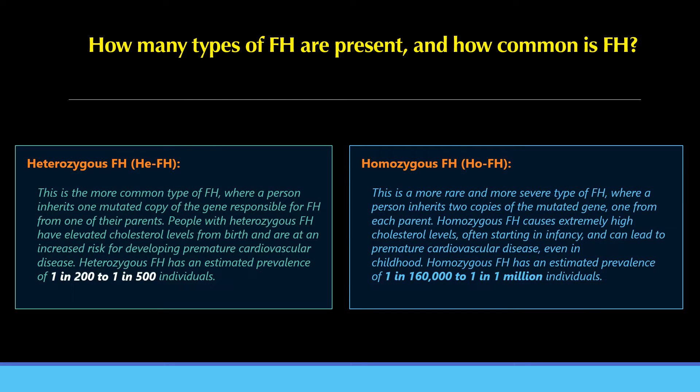Homozygous FH is a more rare and more severe type, where a person inherits two copies of the mutated gene, one from each parent. Homozygous FH causes extremely high cholesterol levels, often starting in infancy, and can lead to premature cardiovascular disease even in childhood. Its estimated prevalence is 1 in 160,000 to 1 in 1 million individuals.